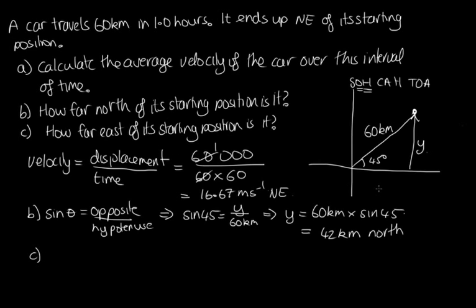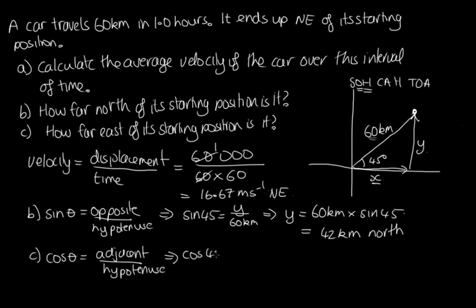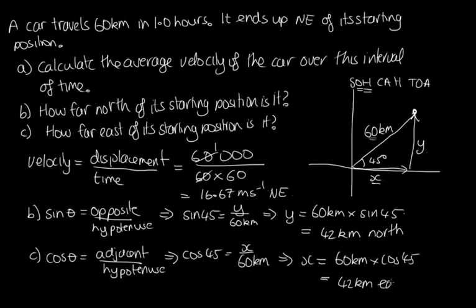Part C: how far east? We call this distance x. Here x is adjacent to the angle, so we use cosine. cos(theta) = adjacent / hypotenuse, so cos(45) = x / 60 km. Therefore x = 60 km × cos(45), giving 42 kilometres east.